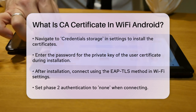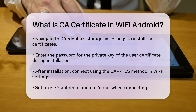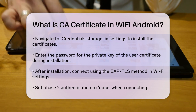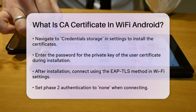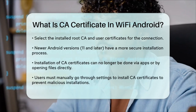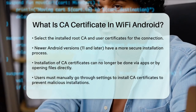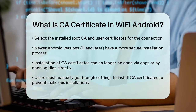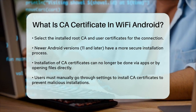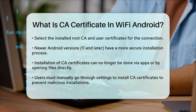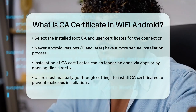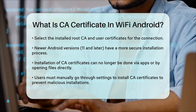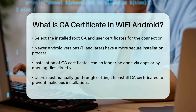In newer versions of Android, like Android 11 and later, installing CA certificates has become more secure, but also more complicated. You can no longer install CA certificates through apps or by simply opening the certificate file. Instead, you have to go through the settings manually. Open Settings, go to Security, then Encryption and Credentials. Select Install from Storage and choose CA Certificate. Browse to the certificate file and confirm the installation. This process ensures that users are protected from accidentally installing malicious certificates, which could compromise their privacy and security.